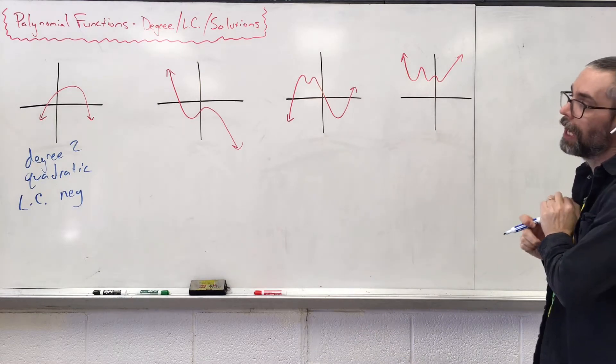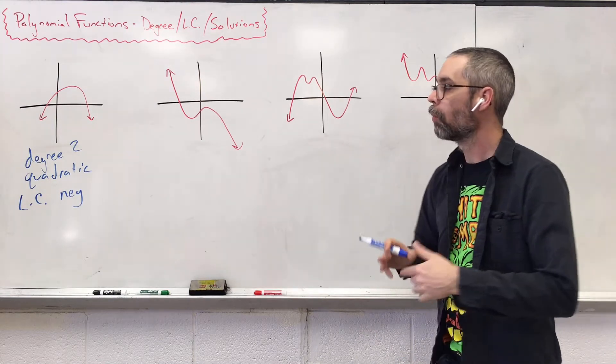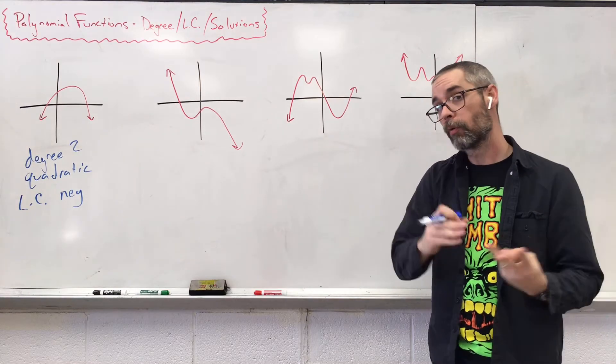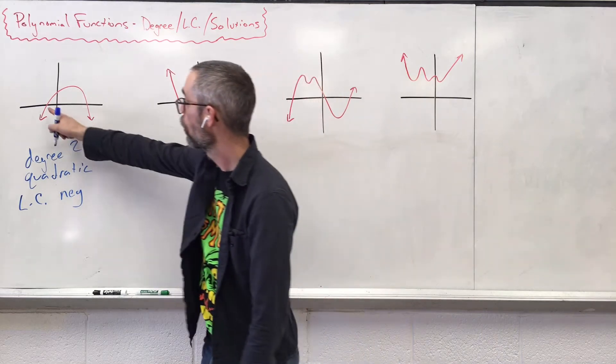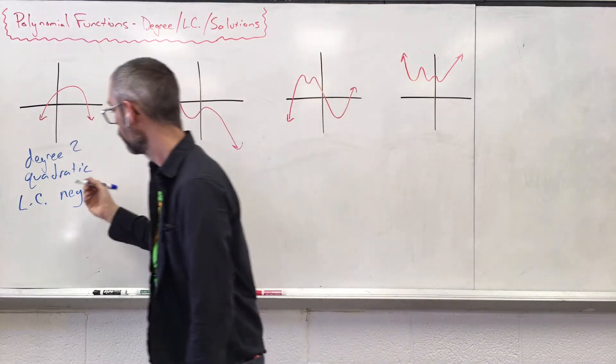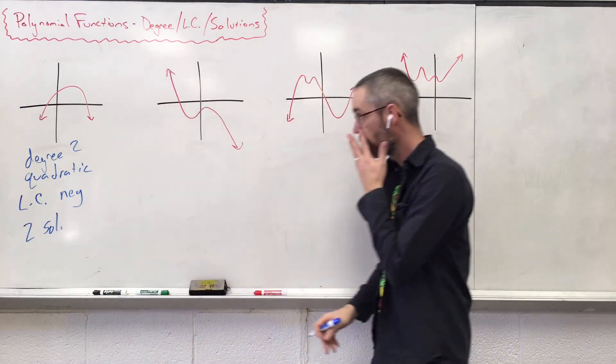And then I want to know how many solutions or roots or zeros do we have in this? Well, a solution, a root, a zero - three words meaning all the same stuff. How many times do we cross the x-axis? One, two, we have two solutions.